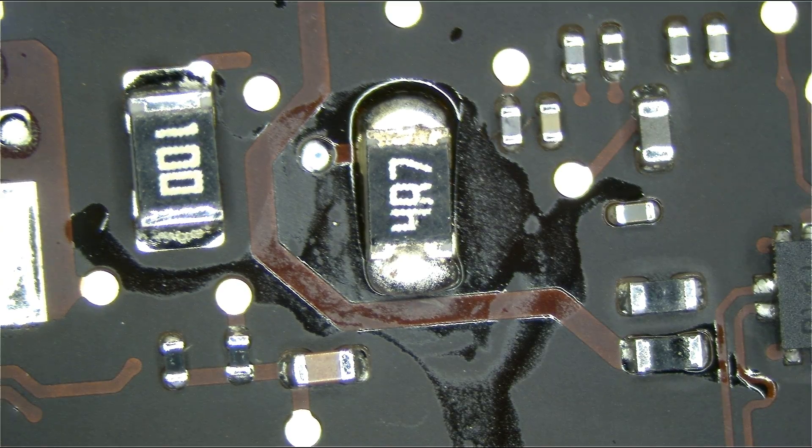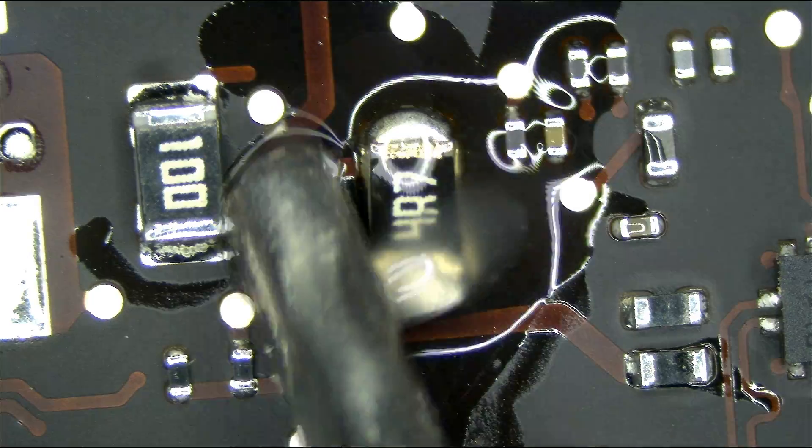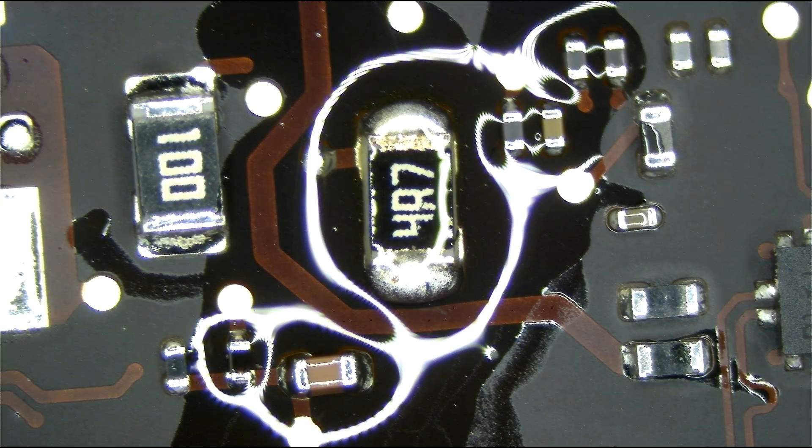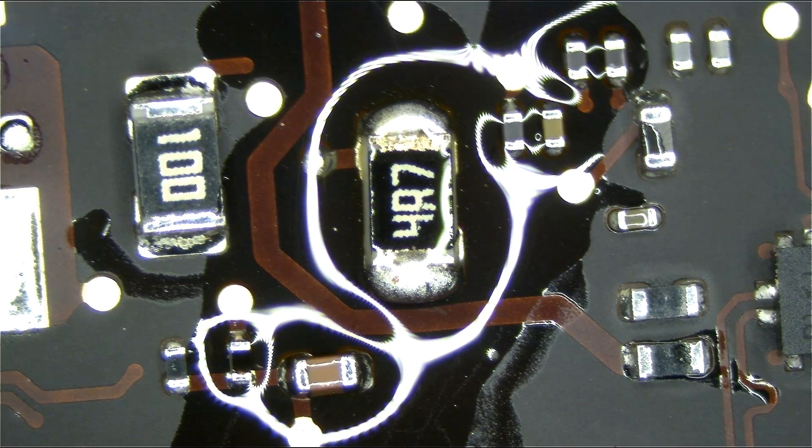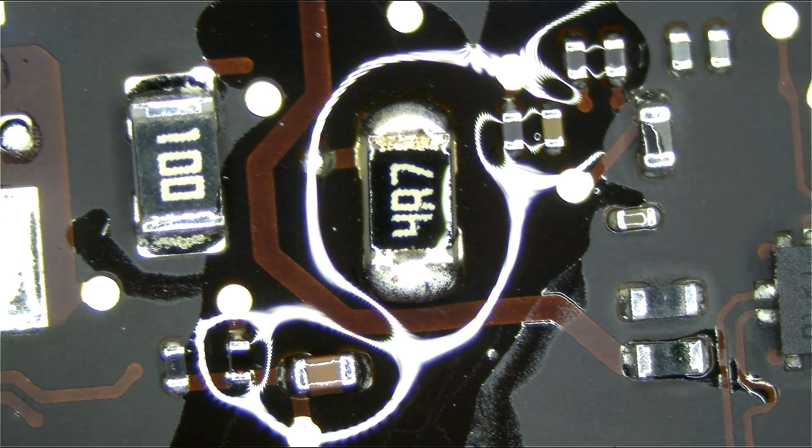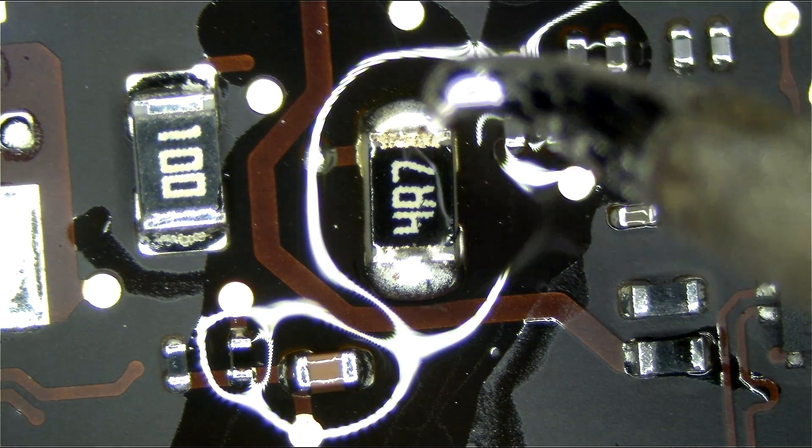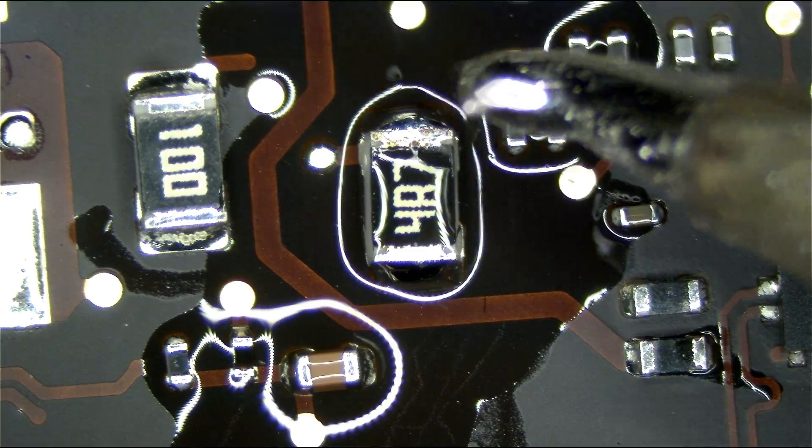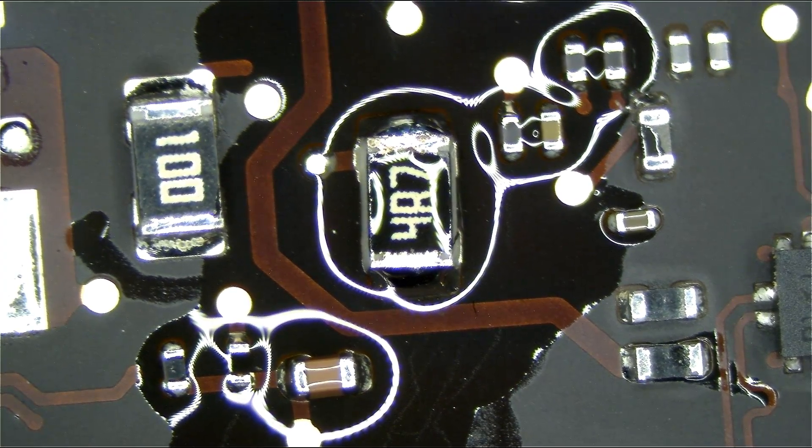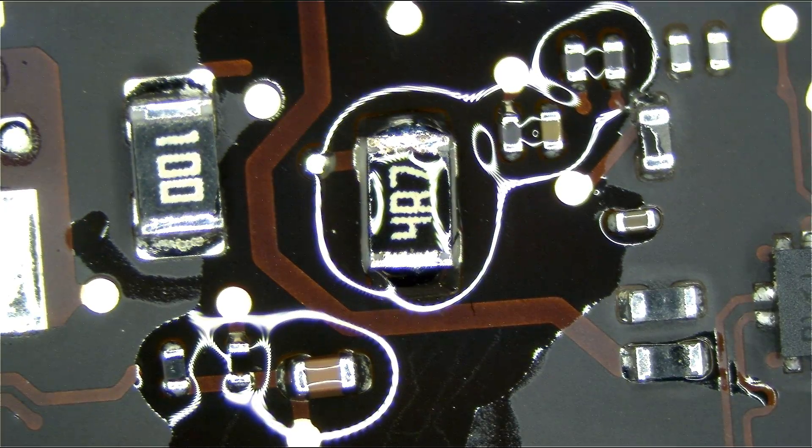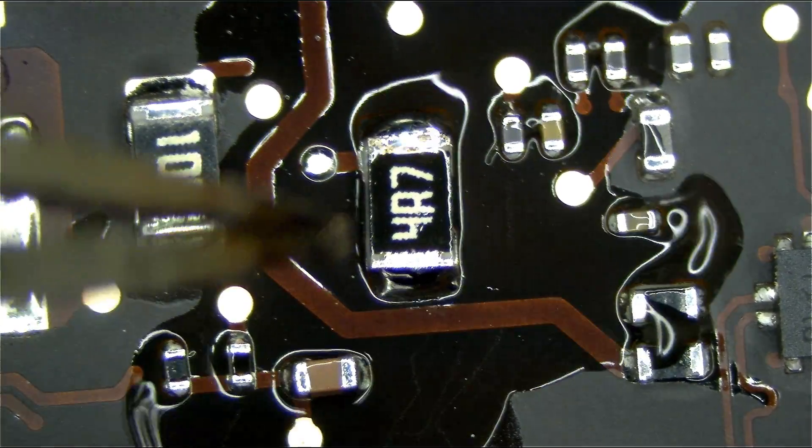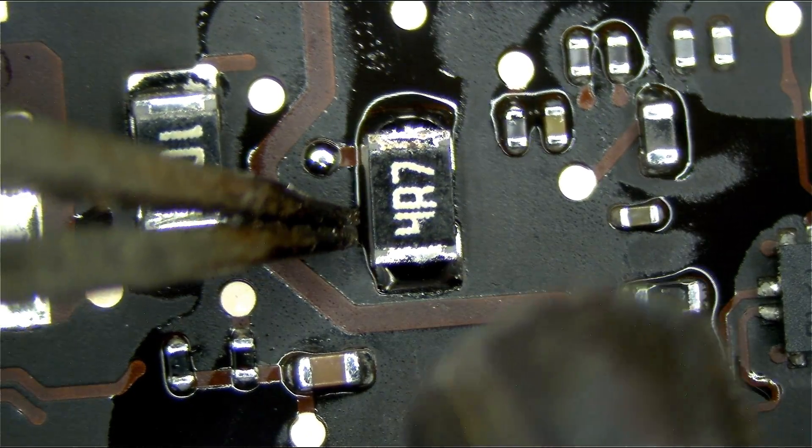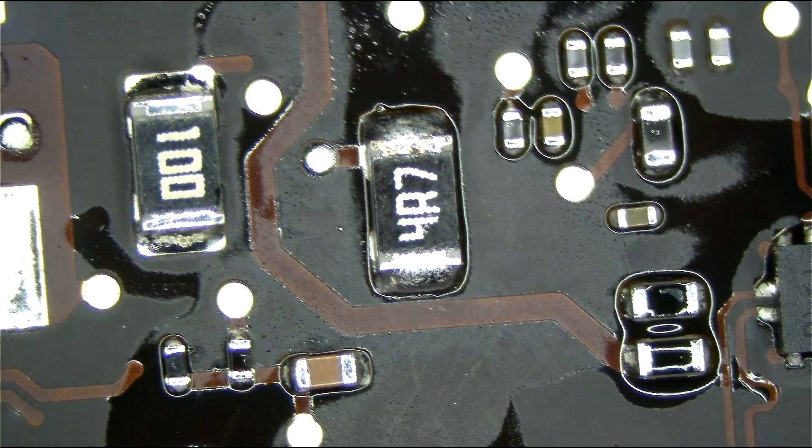Now we're just going to touch it up a little with some Amtech 559 flux. And my curvy tip, which was a casualty of the Baku video I uploaded - you can see it doesn't look as nice as it used to. Now let's go over it one more time and flow it into place. Surface tension will be very helpful here. See? Nice and straight. That's exactly where it's supposed to be.